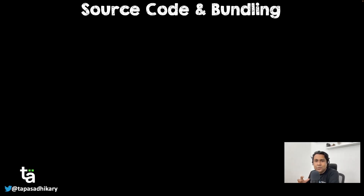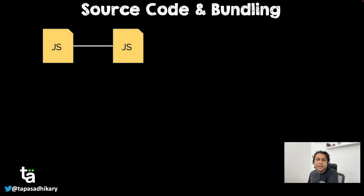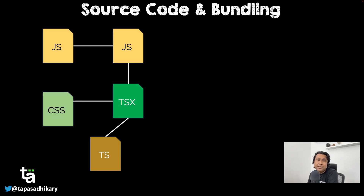Before we get started with code splitting, let us understand what source code and bundling means. There is a term in software engineering called bundling. Let's understand what exactly bundling means because code splitting has a lot to do with bundling. When you are writing source code, you will be writing it in various ways — you'll have some JavaScript files, some CSS files, some TypeScript files. You have a bunch of files which are linked with each other, and you might be consuming external NPM packages with their own JavaScript and CSS in your web application.